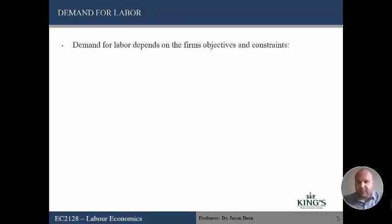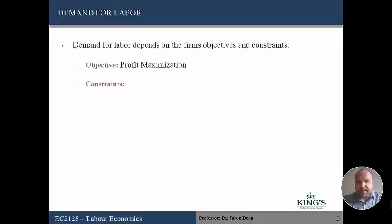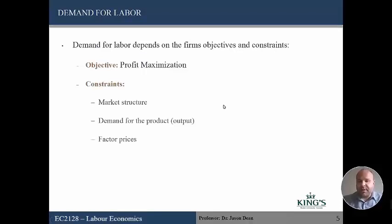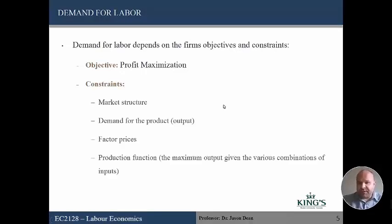The demand for labor depends on the firm's objectives and constraints. Their simple objective is to maximize profit, and they face a number of constraints: the market structure they're in, the demand for the product (consumer demand), factor prices, and the production function — which gives the maximum output given various combinations of inputs.